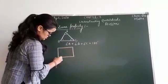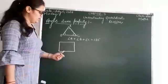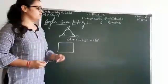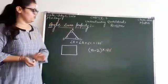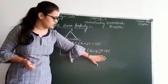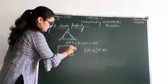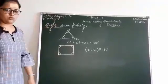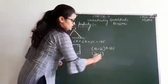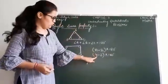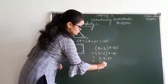If we have a quadrilateral — a polygon having 4 sides — what about the angle sum property of this quadrilateral? When we have to find the angle sum property of any polygon, we apply a very simple formula: (N − 2) × 180 degrees, where N is the number of sides. For a quadrilateral, N = 4, so we calculate: (4 − 2) × 180 degrees.